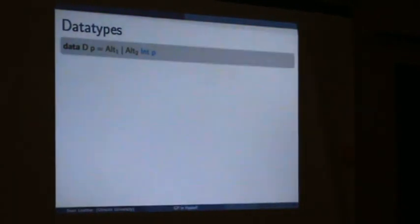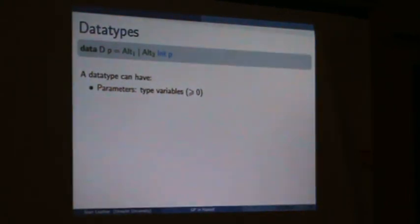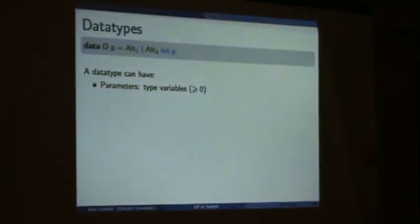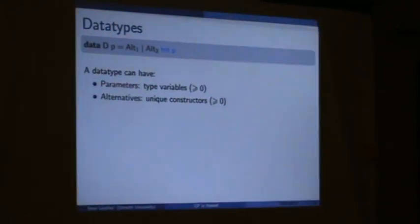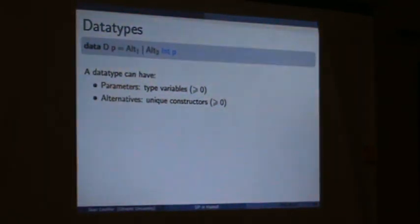Here's an example data type D. It takes a parameter P and has two constructors: Alt1 and Alt2. Alt2 takes two fields — int and the type P. A data type can have zero or more parameters and zero or more alternatives. Each constructor is a uniquely named value.